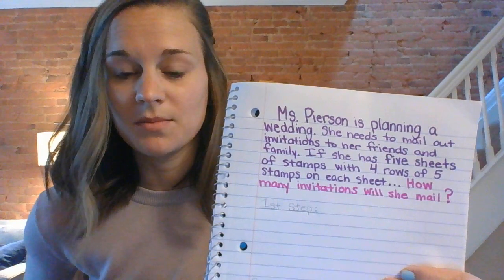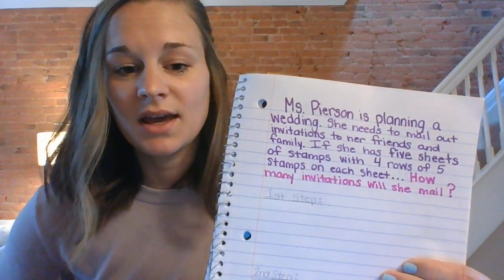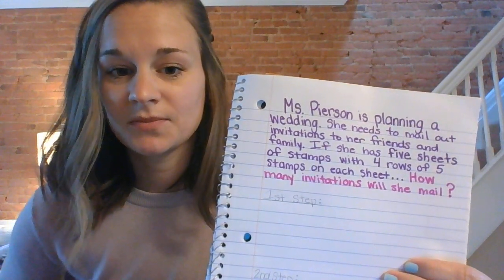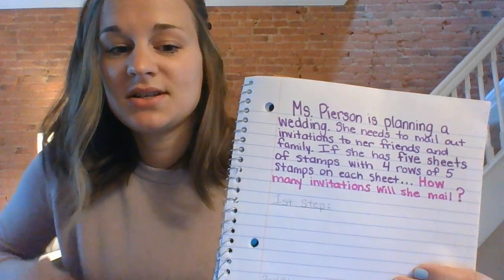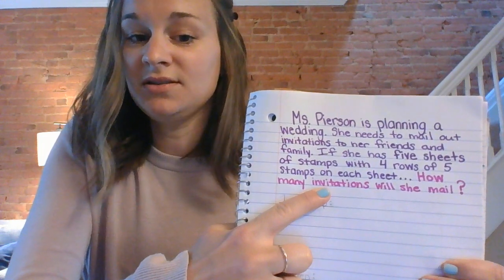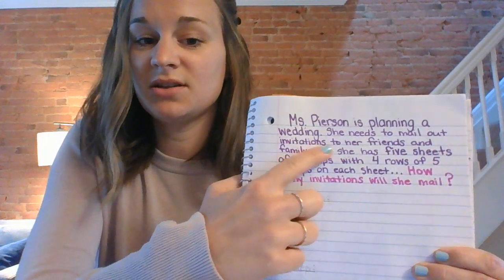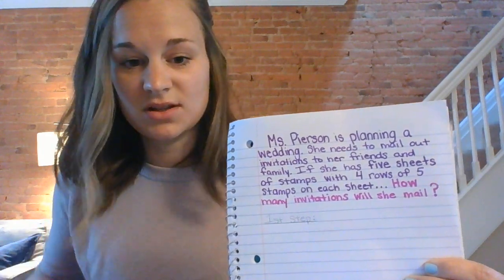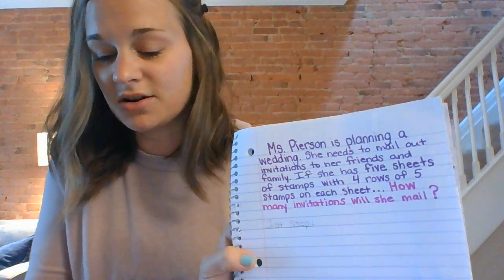My third graders are working on two-step word problems this week. There are two things I need to know in order to answer the question. First of all, I notice that the question is asking for how many invitations. I need to find how many invitations I'll need using the information about stamps. Remember, every invitation needs a stamp to be mailed. So the first piece of information this story problem gives you is that there are sheets of stamps — I have five of them.